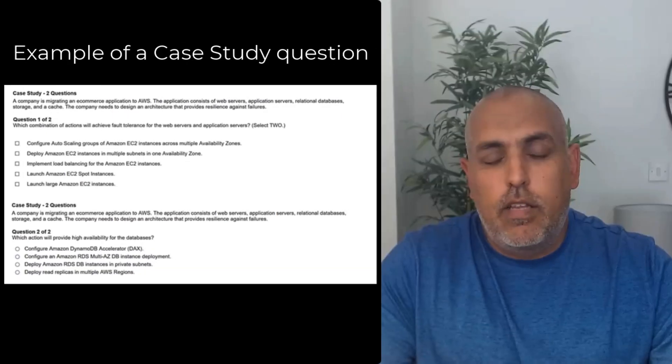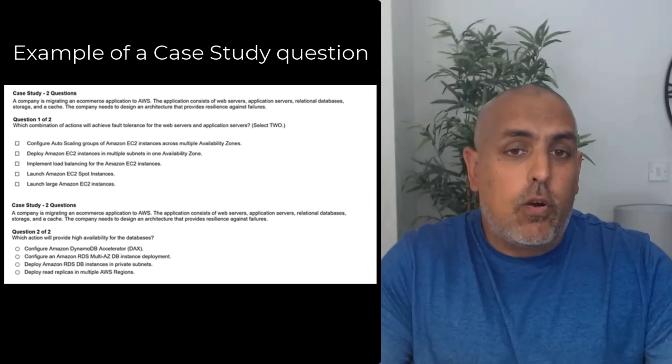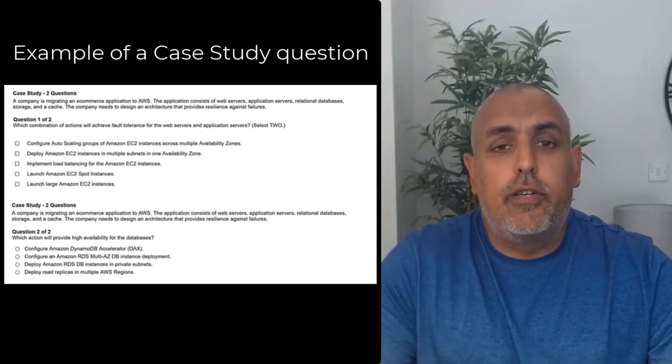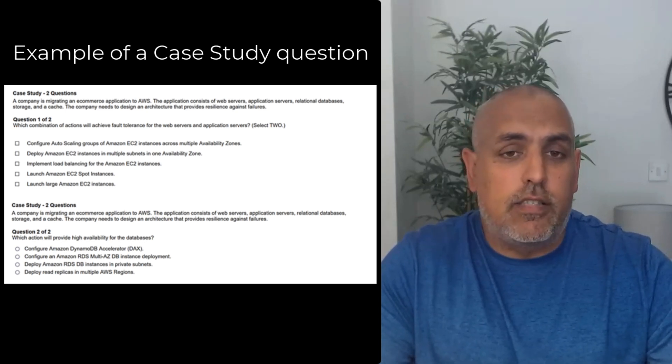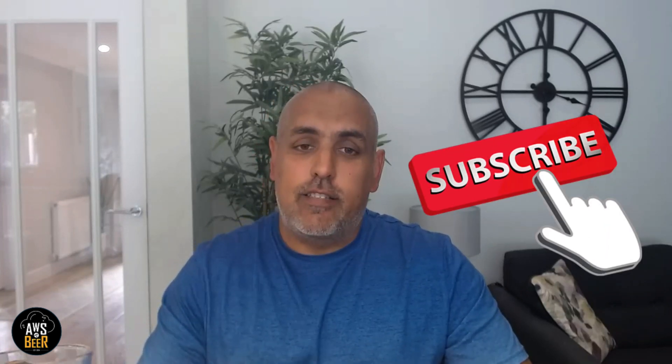The example given by AWS of a case study question looks like this. As you can see, the scenario is given at the top and there are two separate questions that relate to this same scenario. Question one is a multiple response question where you have to select two options, and question two is a multiple choice question requiring just a single selection. Those are the three new exam question types you are going to see in the AWS AI Practitioner and the AWS Machine Learning Associate. I imagine we will be seeing these filtering into other AWS certifications very soon too. Let me know your thoughts on these new exam questions in the comments, and until next time — cheers and good luck.